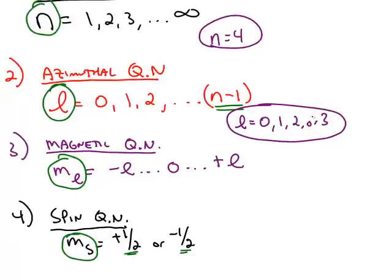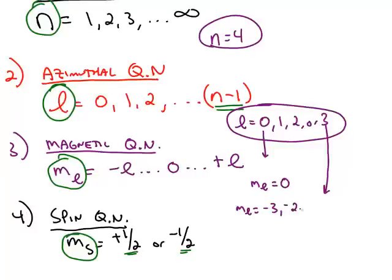It's going to be one of those numbers, and depending on which number it is, we have different values for m sub l. For example, when l is 0, m sub l has only one possibility — between negative 0 and positive 0, the only answer that works is 0. But at the upper extreme when l is 3, m sub l can be negative 3, negative 2, negative 1, 0, plus 1, plus 2, or plus 3.